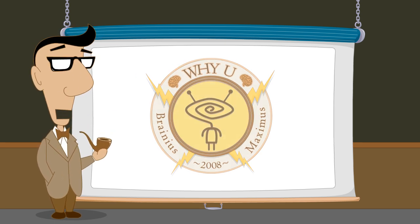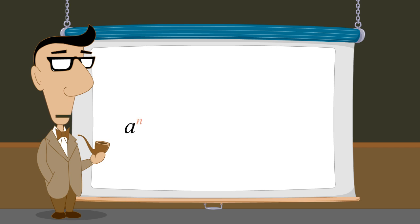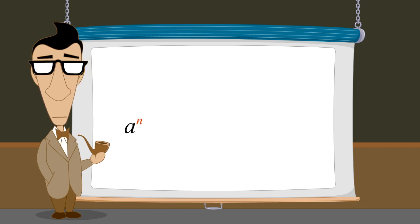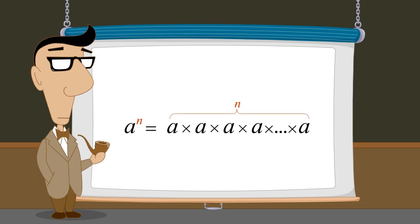We have seen that any number a raised to the nth power where n is a positive integer is equivalent to n a's multiplied together. We also saw that to multiply exponential expressions with the same base we add their exponents.